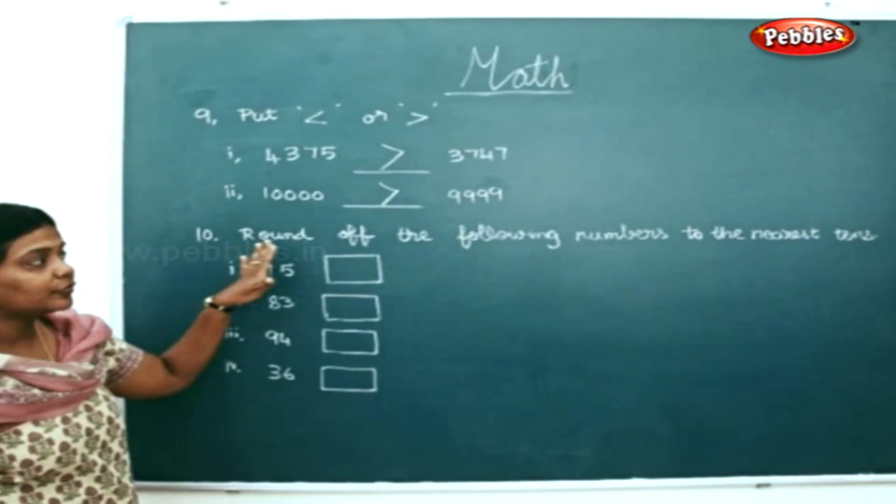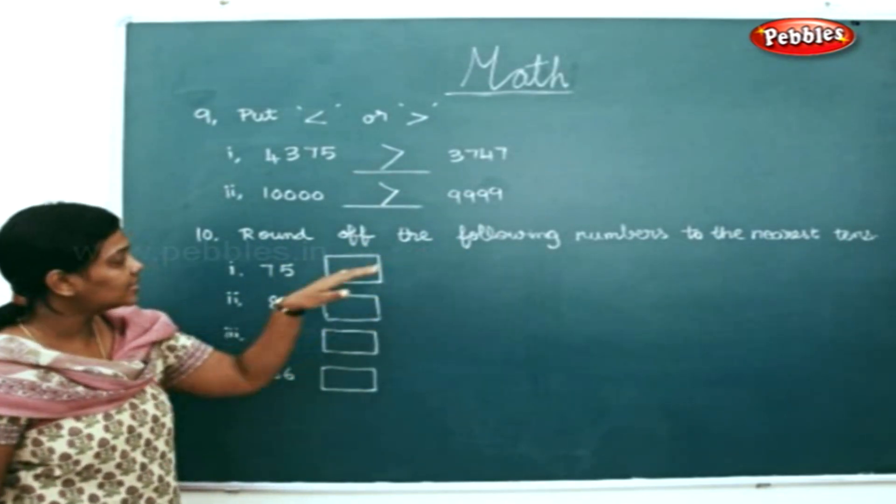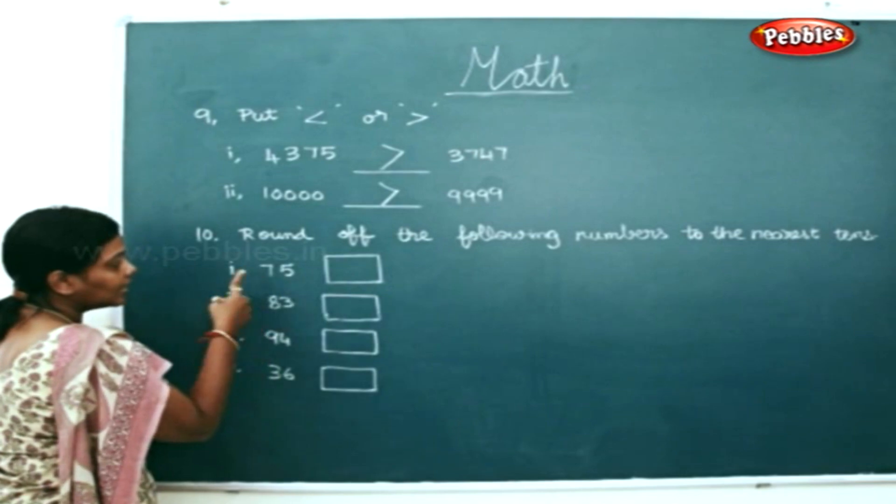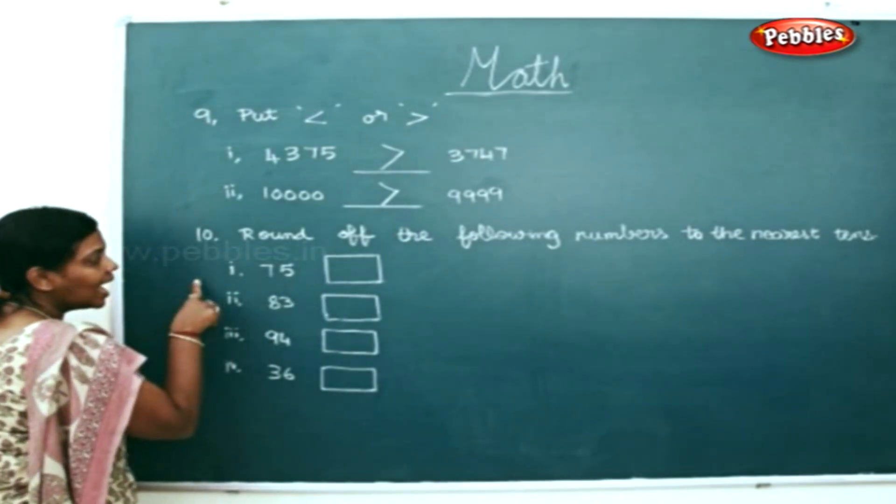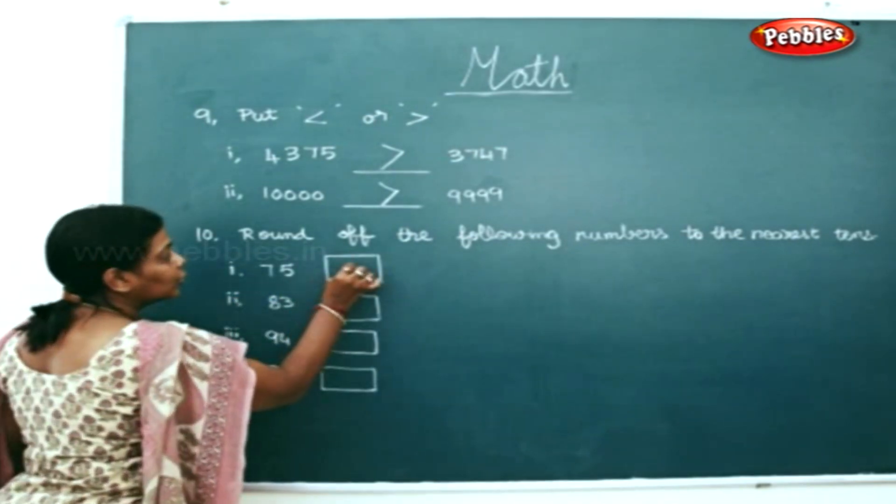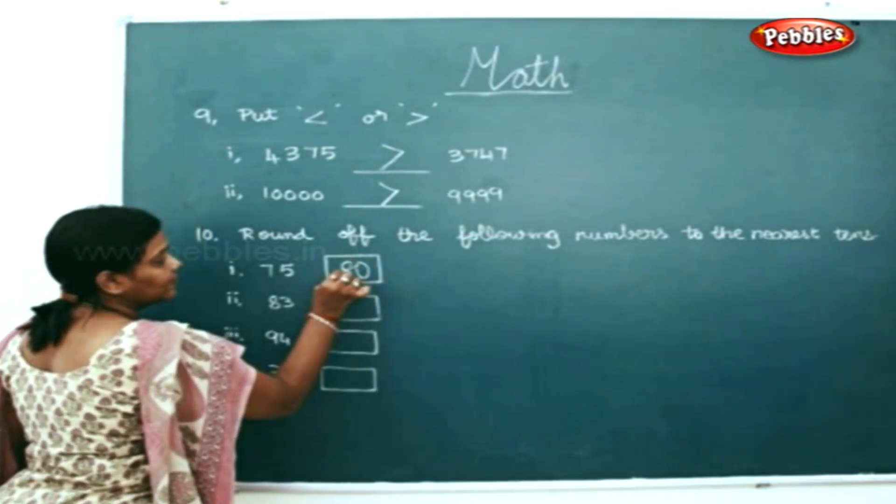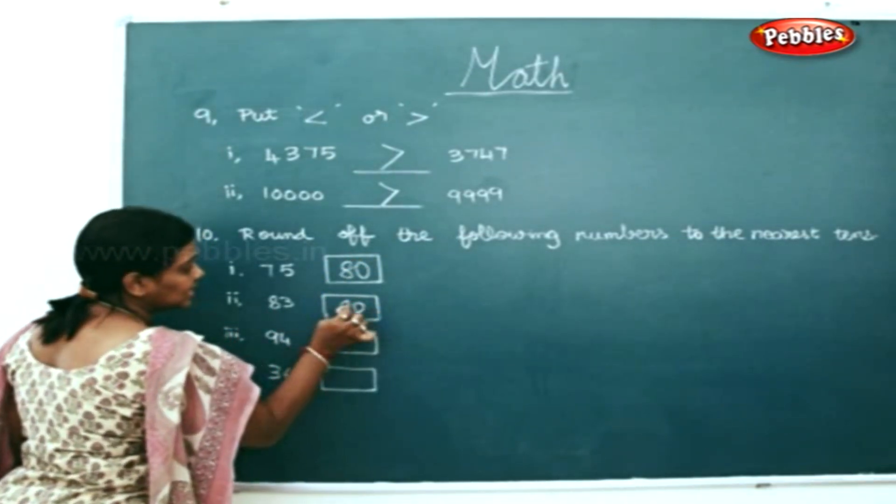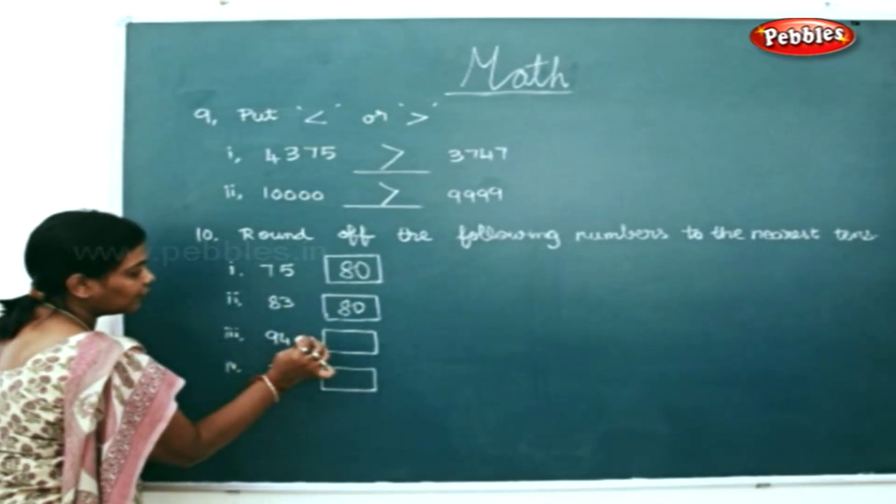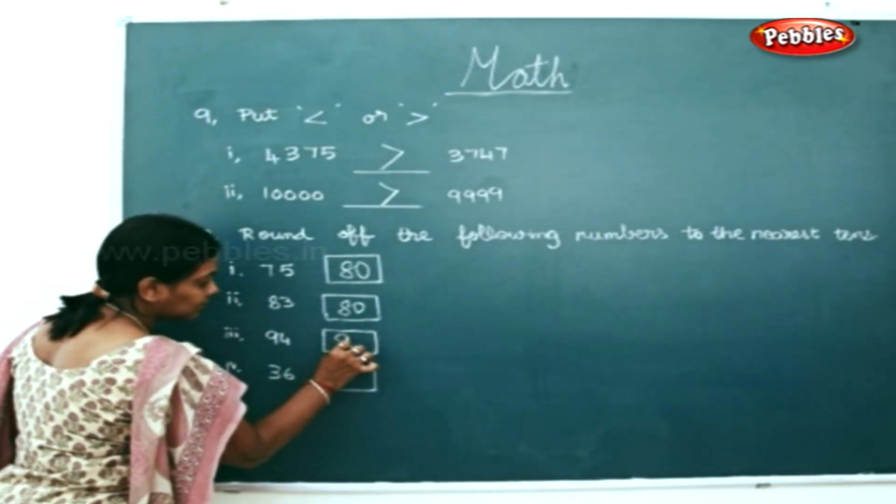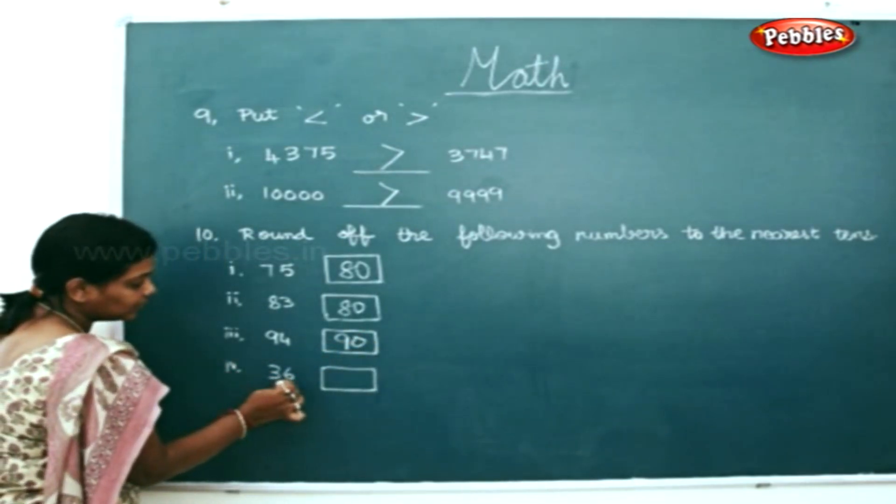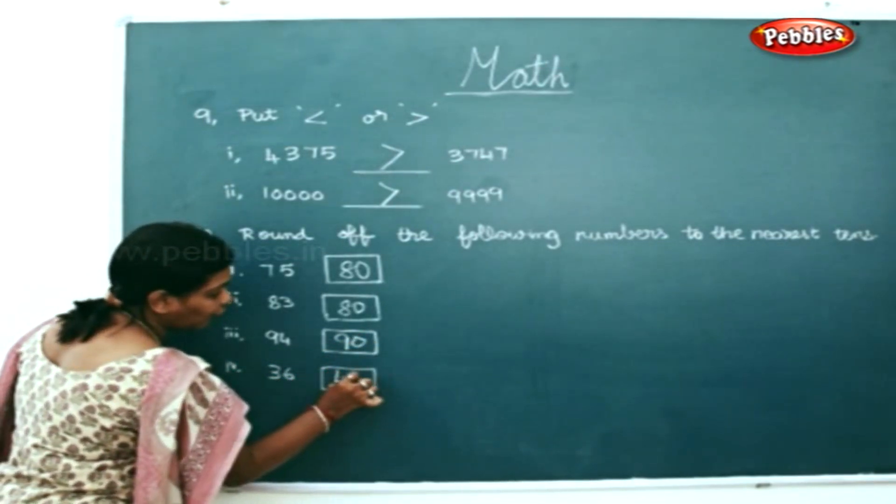Now we are going to round off the following numbers to the nearest tens. 75 will be rounded off to 80. 83 will be rounded to 80, the closest number. 94 will be rounded off to 90. 36 will be rounded off to 40.